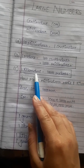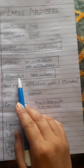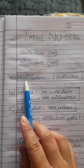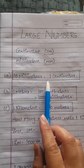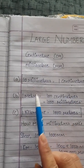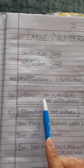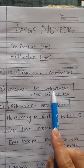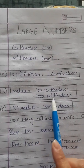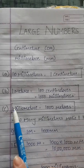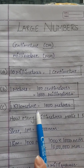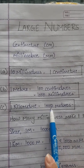Children, you all have to learn this: 10 millimetres equals 1 centimetre. 1 metre equals 100 centimetres or 1000 millimetres. And 1 kilometre equals 1000 metres.